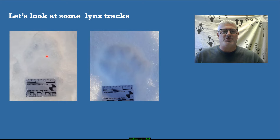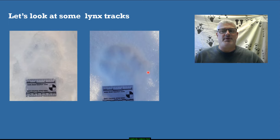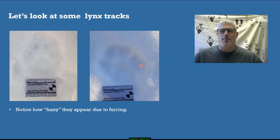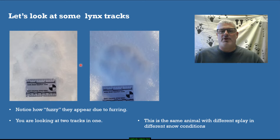This track is about three inches wide, and the one on the right is three to four inches wide. The size difference is due to a few things: lynx can splay their feet intentionally in deeper snow, and this is also an imperfect direct register track — you can see an extra toe from the hind foot making it look a little bigger. The fuzzy appearance and two-tracks-in-one are important things to remember.